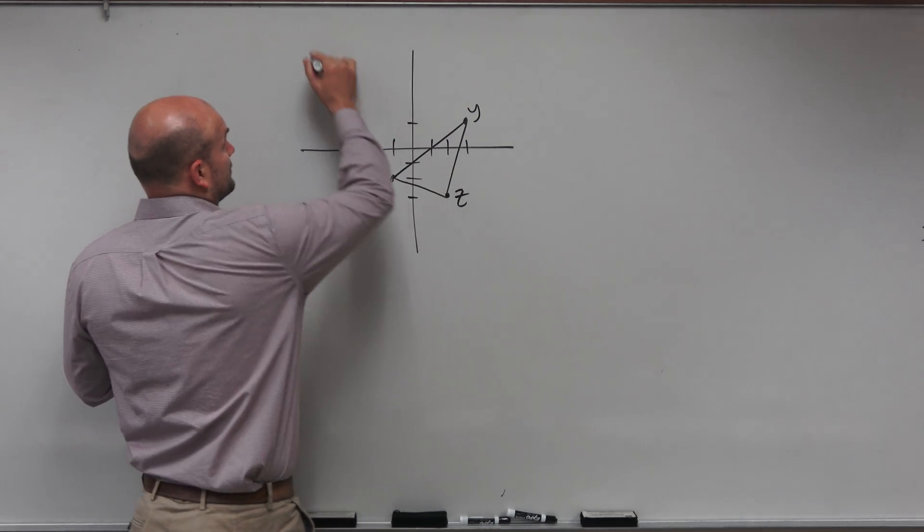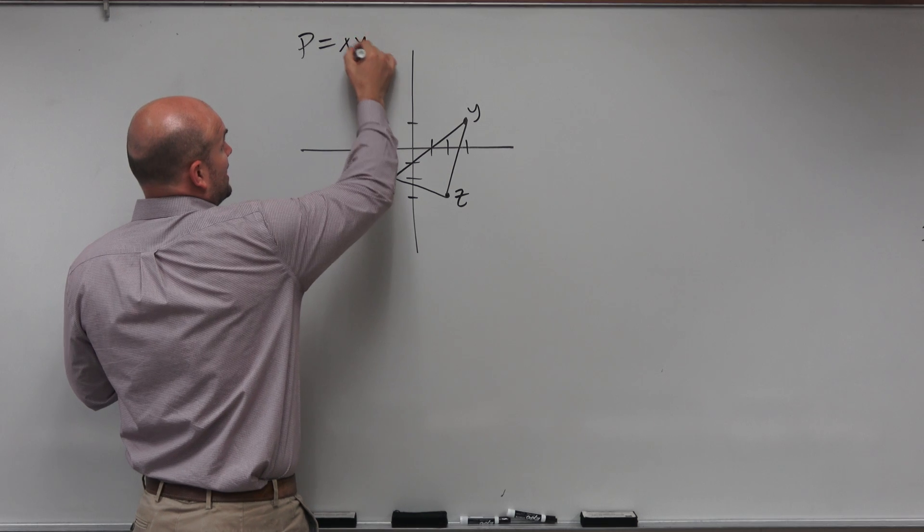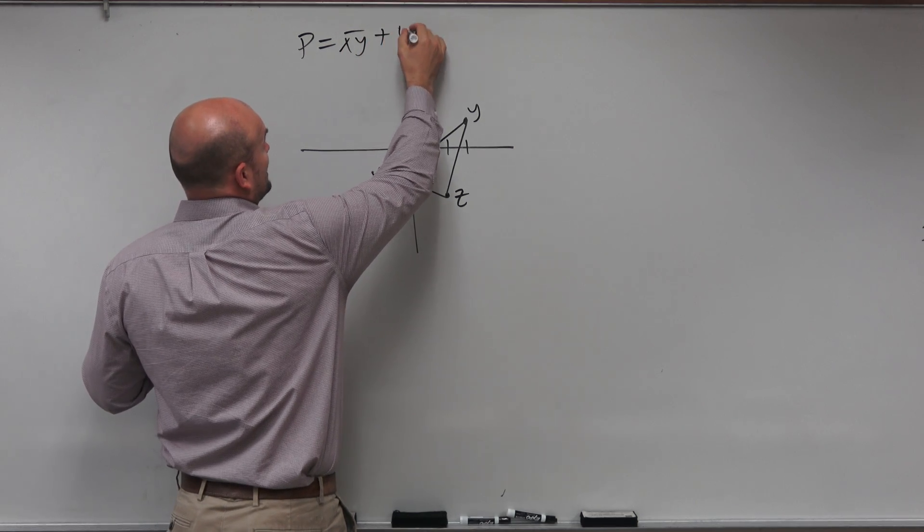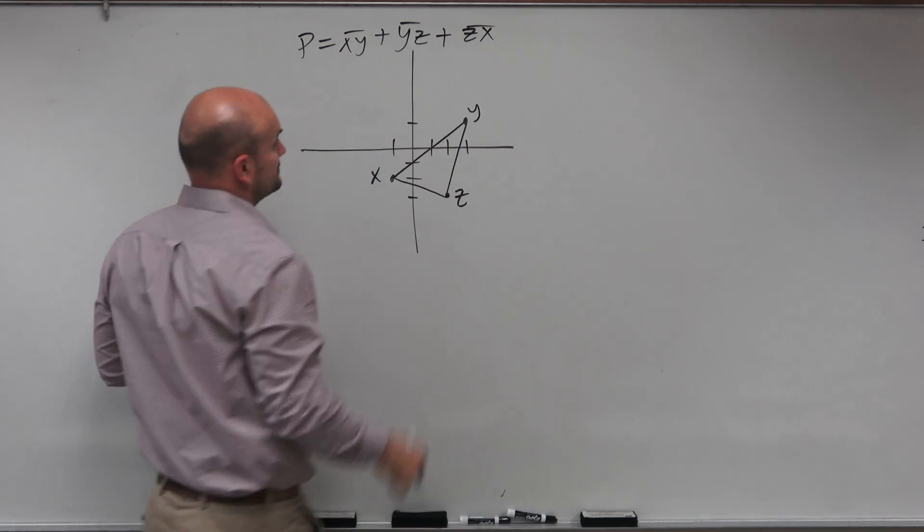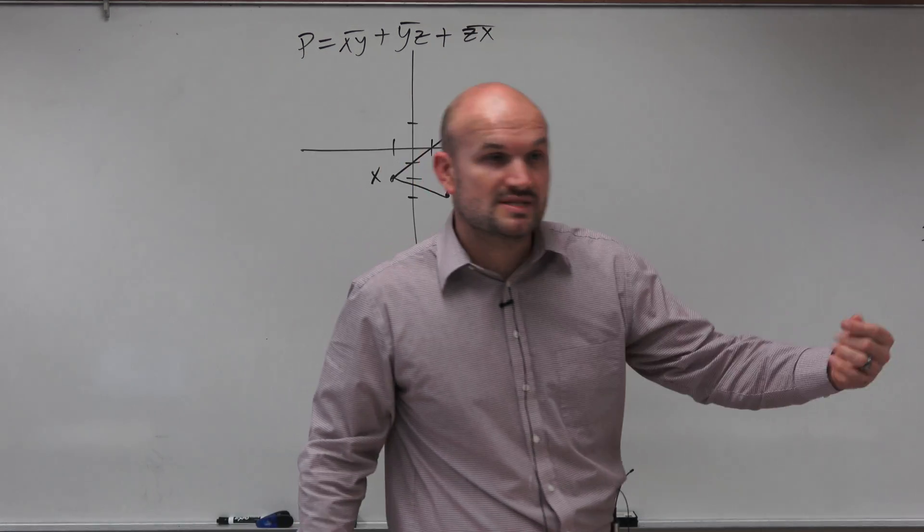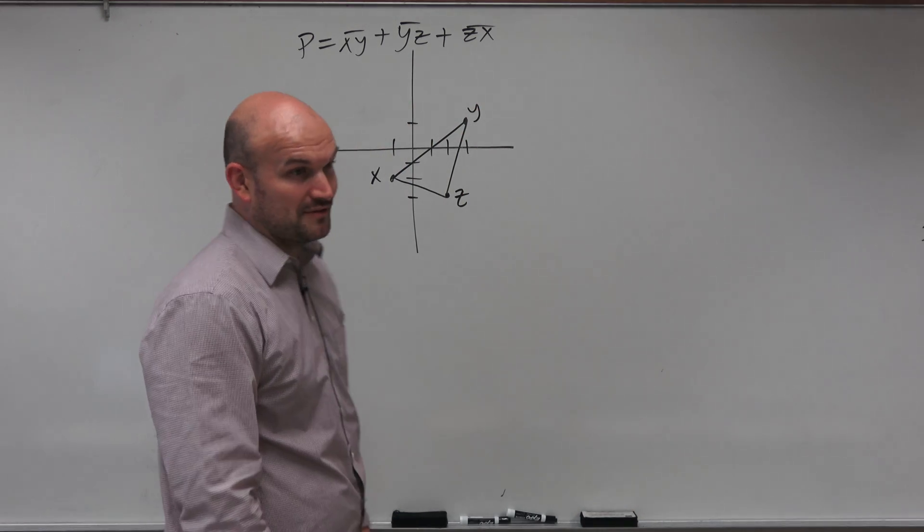So the perimeter is going to equal the length xy plus yz plus zx. OK, so it's going to be the sum of all of those lengths. So that means we need to find all the lengths.